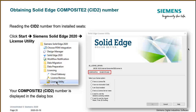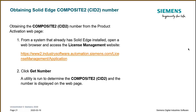The first method is reading the CID number from installed seats: go to Start > Siemens Solid Edge 2020 (or 2019) > License Utility, and you can read the Composite CID number right underneath the license server information. The second method is getting the number from the product activation web page: from a system that already has Solid Edge installed, open a web browser, access the license management website using the link shown, and click Get Number. The utility will run to determine the Composite CID and the number will be displayed on the web page.